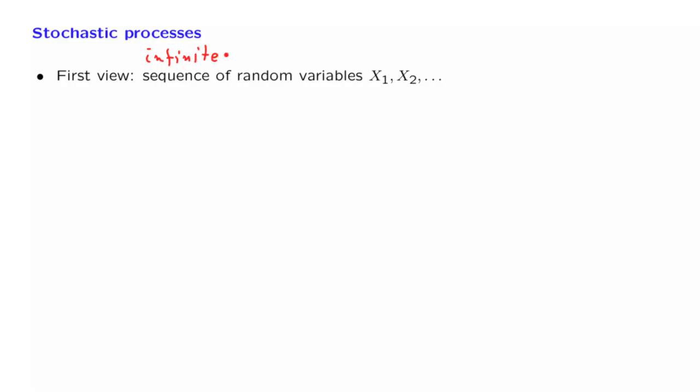And that complicates things to a certain extent. What does it take to describe a stochastic process? We should specify the properties of each one of those random variables. For example, we might be interested in the mean, variance, or PMF of those random variables.